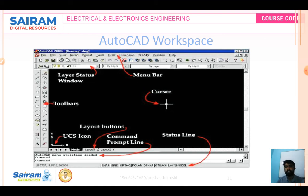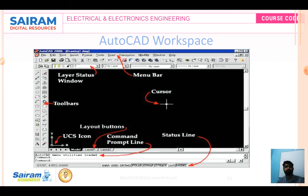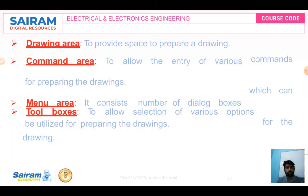The layer status window shows which layer you are currently using. The layout button allows you to extract a diagram after completing the model — after drawing is done in model mode, you switch to layout. The command prompt line, status line, and cursor are for movement. The drawing area provides space to prepare drawings, the command area allows entry of various commands, and the menu area consists of dialog boxes and toolboxes for selecting various options used in preparing the drawing.